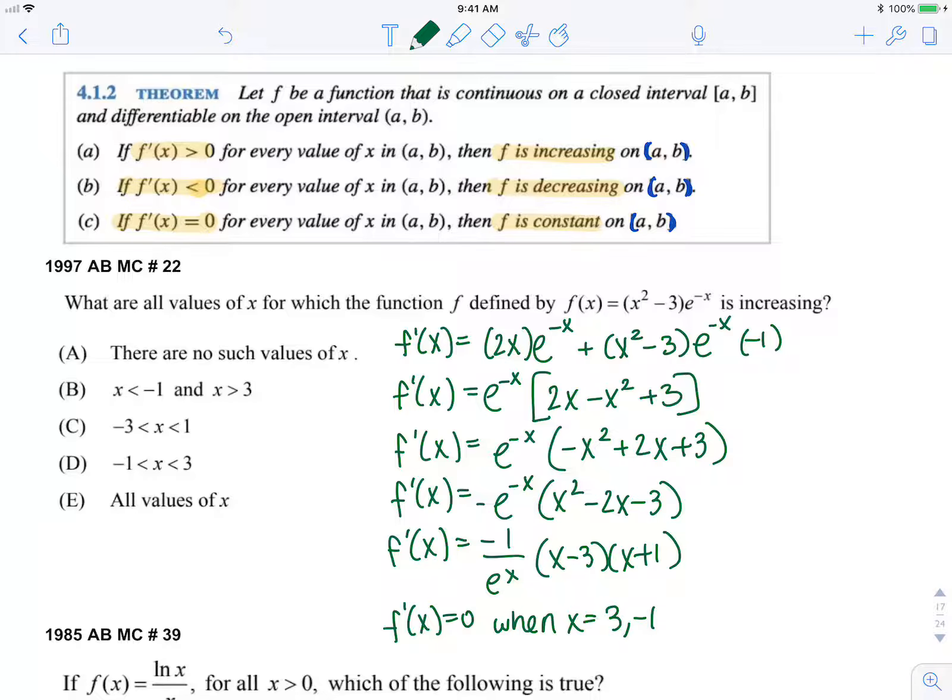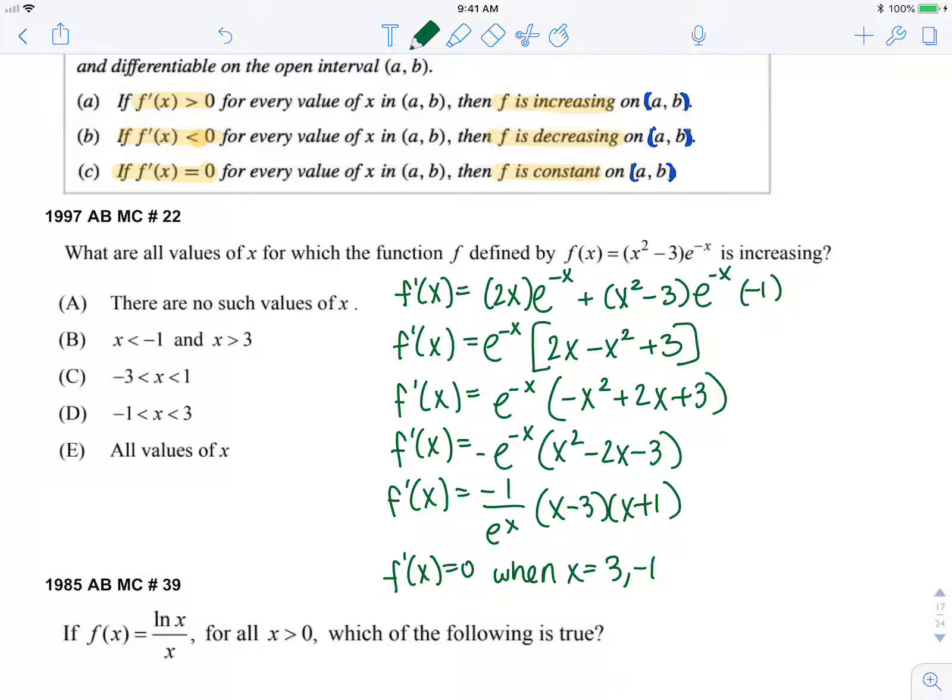Those are the important values to check my intervals at. So we can do a little sign chart to see what's happening around these values. We have negative 1 and 3, and we're checking our derivative to see the sign or the increase or decrease of our original function.